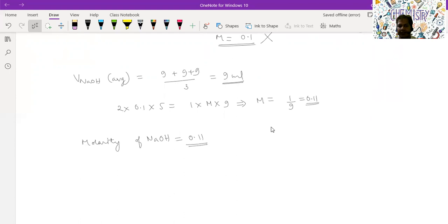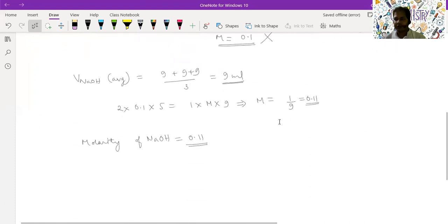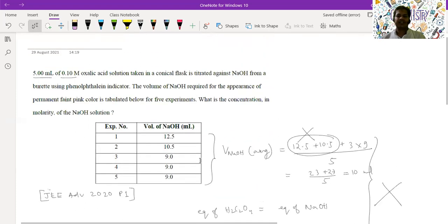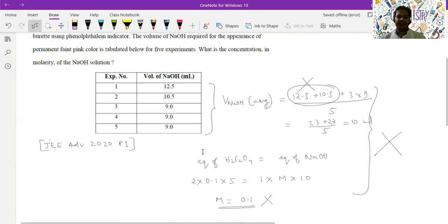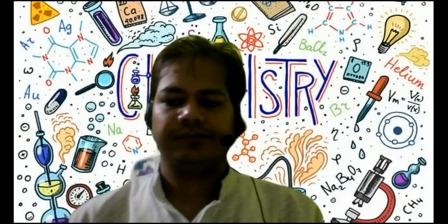The important point here is we have to ignore the first two readings and take the average of only the concordant readings. It was a numerical integer type question; we had to mark the answer accurate up to two digits after decimal, so we'll put 0.11. I hope I am very clear on the solution to this question. This is a simple question, straightforward, not much calculations involved. Simple concept: equating the equivalents of NaOH and oxalic acid. We have to correctly put the n factor of oxalic acid as two and correctly take the volume of NaOH as 9 mL. That's it. Thank you everyone. I will be putting more videos.